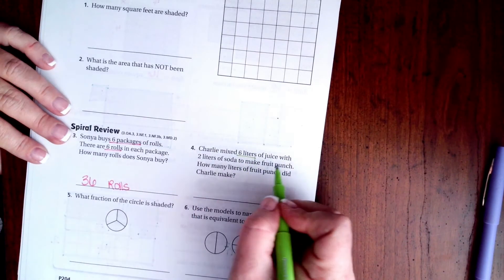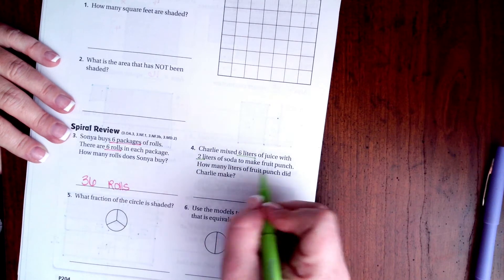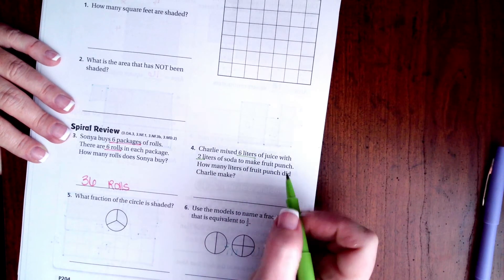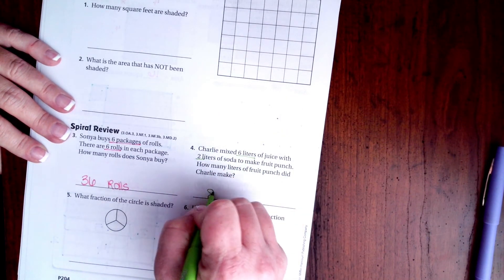Charlie mixes 6 liters of juice with 2 liters of soda to make Fruit Punch. How many liters of Fruit Punch did he make? Well, 6 plus 2 is 8 liters.